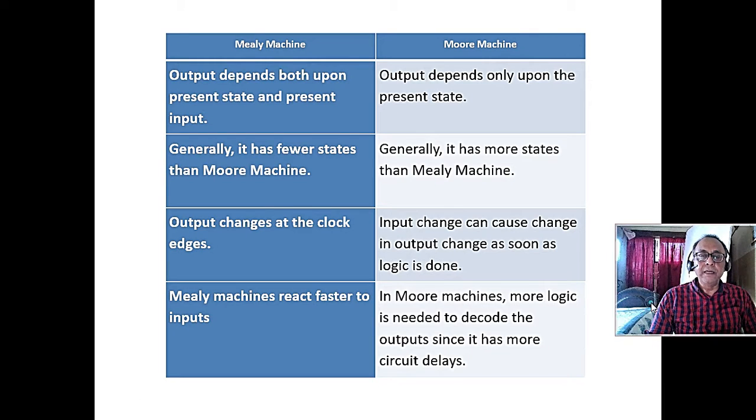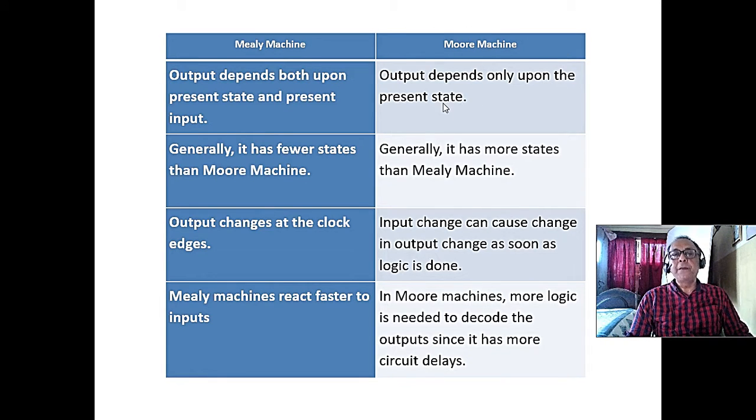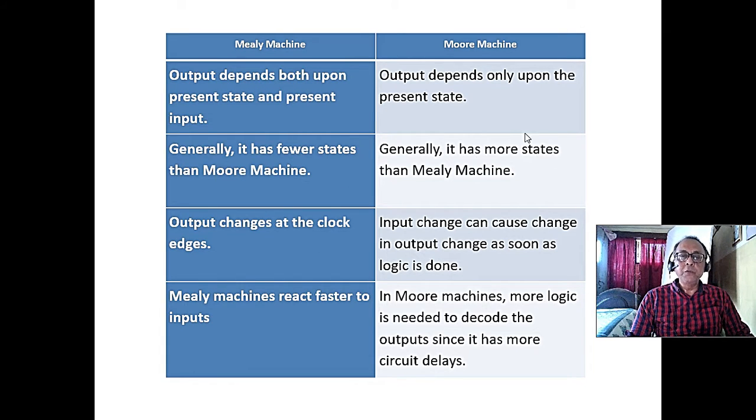These are the distinctions. Mealy machine: output depends upon present state and the present input. This is like an AND gate. And output depends only upon present state for Moore machine. This is only one input, present state. Generally, it has fewer states than Moore machine. Moore machine is stable. Output changes at the clock edges.